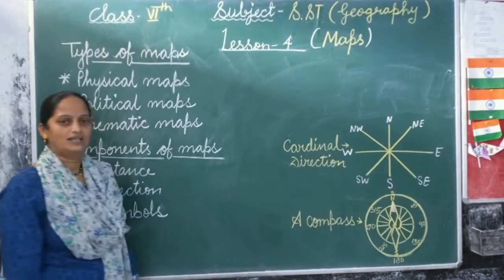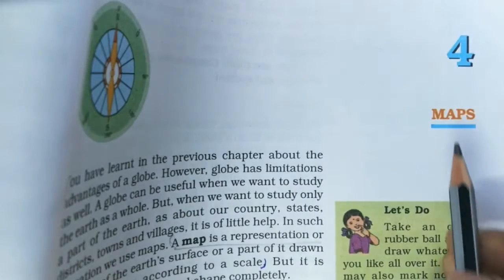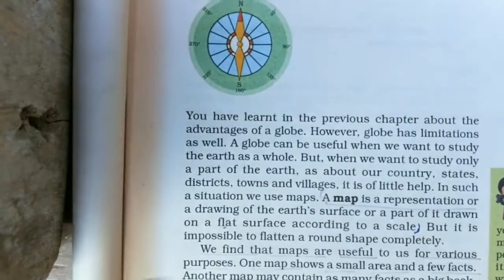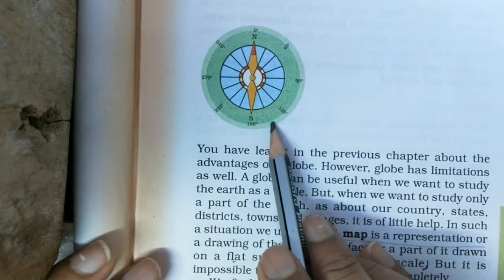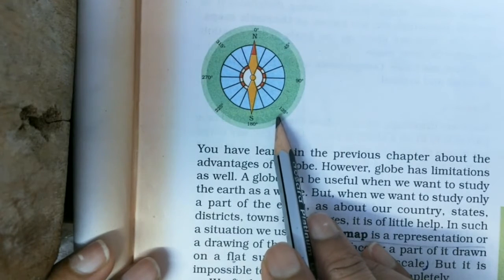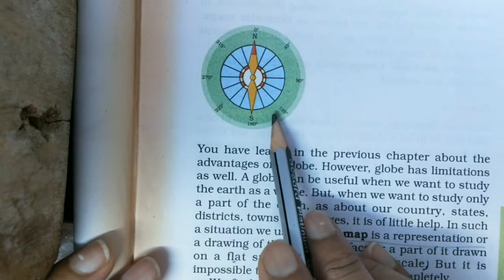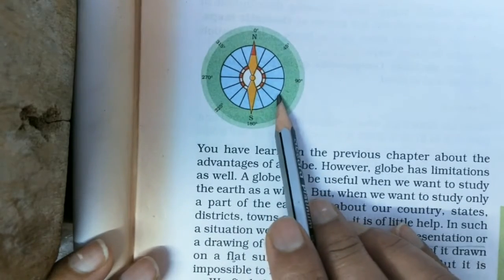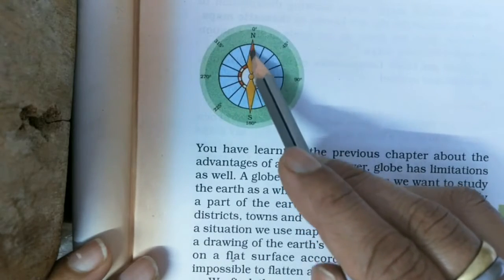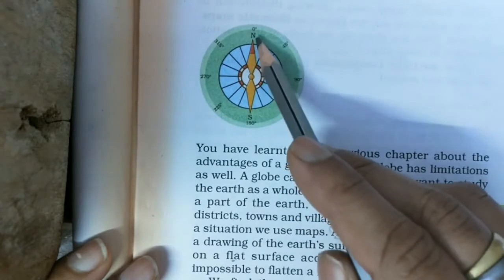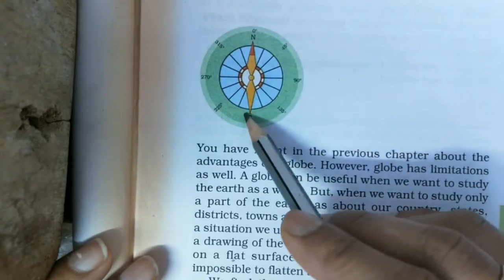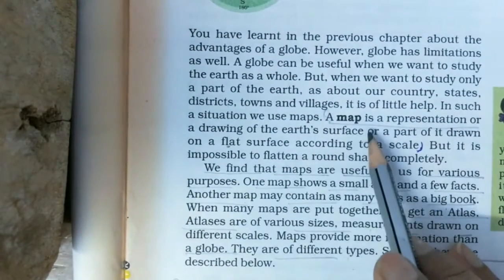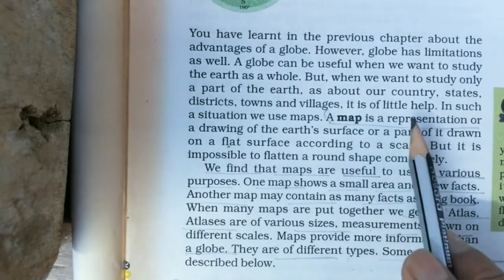Let's start the lesson from the book. Here you can see a picture of a compass. A compass is an instrument for finding direction, with a needle that always points north. Compass एक ऐसा instrument होता है जिसका use किया जाता है direction find out करने के लिए। इसमें एक सुई होती है जो हमेशा north की तरफ point out रहती है — north, south, east, and west। Map, globe से अधिक useful होता है जब हम earth के किसी एक part की study करना चाहें।